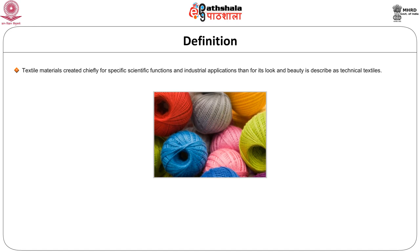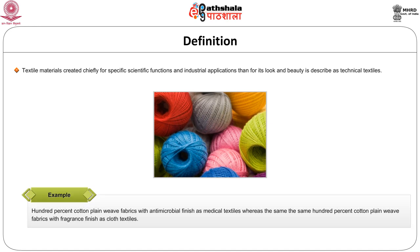It can also be explained as non-aesthetic textile material. In a nutshell, technical textiles is any fiber, yarn or fabric produced with a particular purpose and finish for a well-defined end use. For example, a 100% cotton plain weave fabric with antimicrobial finish can be used as a medical textile, whereas the same 100% cotton fabric with a fragrant finish can be used as a home textile or a cloth textile fabric.